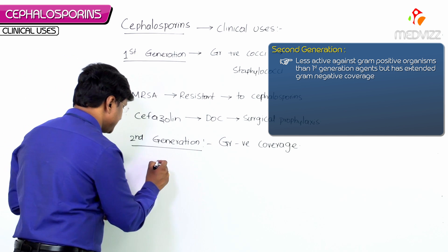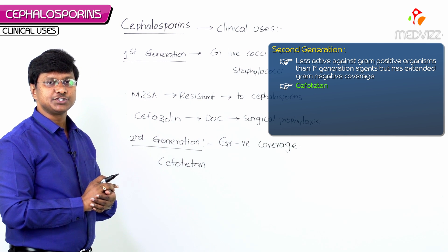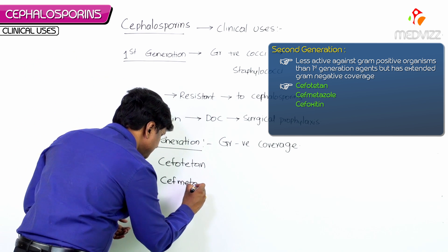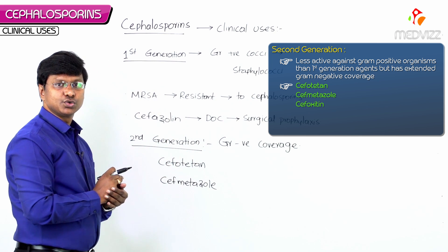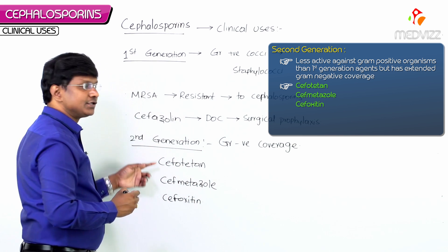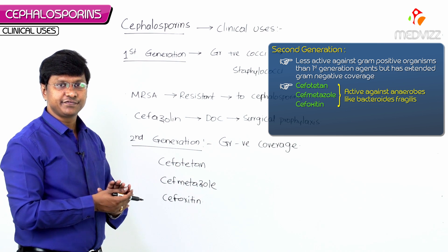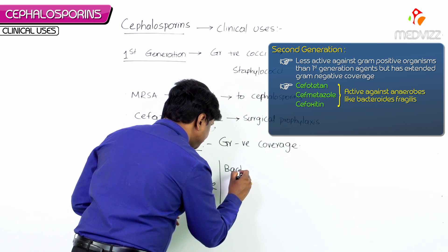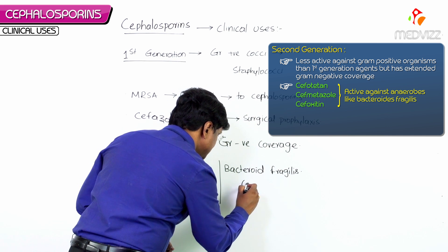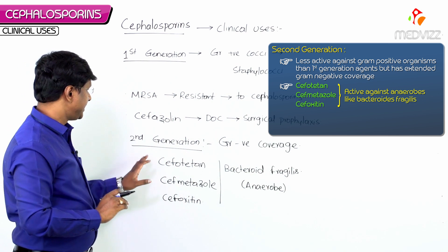Examples of second generation cephalosporins include cefotetan, cefmetazole, and cefoxitin. These drugs are active against anaerobes such as Bacteroides fragilis.